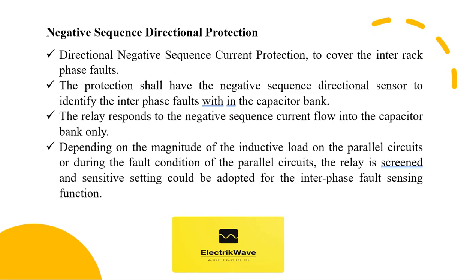Negative sequence directional protection shall have directional negative sequence current protection to cover the inter-rack phase faults. The protection shall have the negative sequence directional sensor to identify the inter-phase faults within the capacitor bank. The relay responds to the negative sequence current flow into the capacitor bank only. Depending on the magnitude of the inductive load on the parallel circuits or during fault conditions of the parallel circuits, the relay is screened and a sensitive setting could be adopted for the inter-phase fault sensing function.